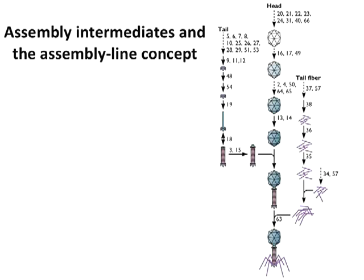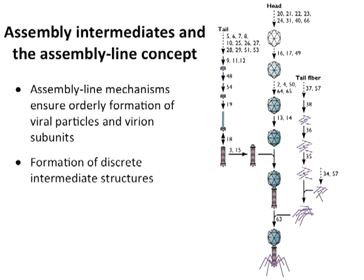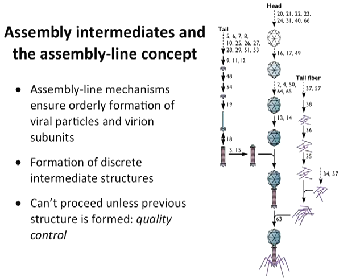Assembly line mechanisms make sure you make the virus in the right sequence of events. You make discrete structures and quality control is the key — you can't make this unless you have this. We make sure that every step of the way works. They're done in very precise steps, not by having 50 or 60 proteins all come together at once.